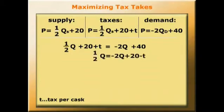So 1/2 Q = -2Q + 20 - t. 5/2 Q = 20 - t. So Q = 8 - 2/5 t.